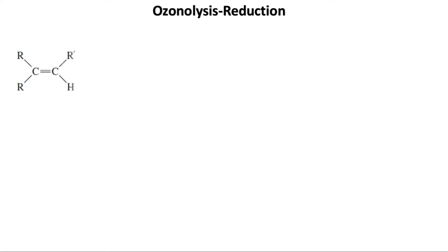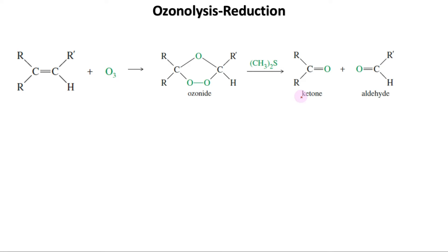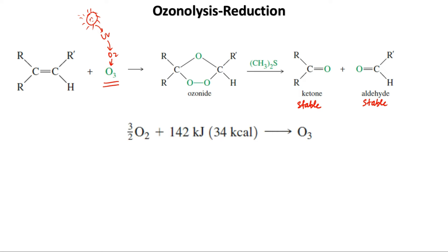Just like permanganate, ozone cleaves double bonds to give ketones and aldehydes. However, ozonolysis is milder, and both ketones and aldehydes can be recovered without further oxidation. Ozone is a high-energy form of oxygen, produced when ultraviolet light or an electrical discharge passes through oxygen gas. Ultraviolet light from the sun converts oxygen to ozone in the upper atmosphere, where the ozone layer shields the earth from high-energy ultraviolet radiation.